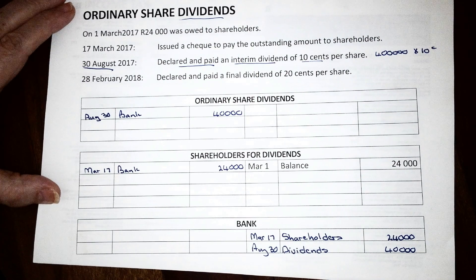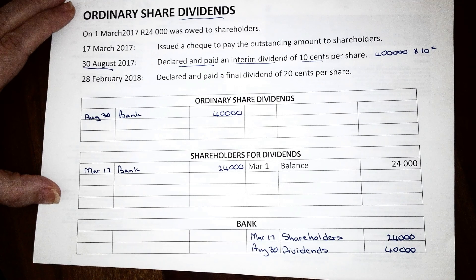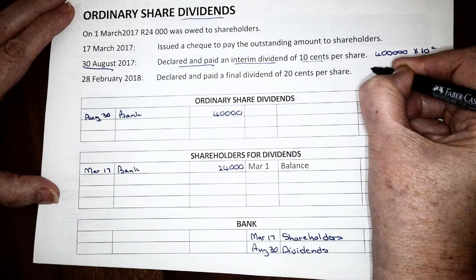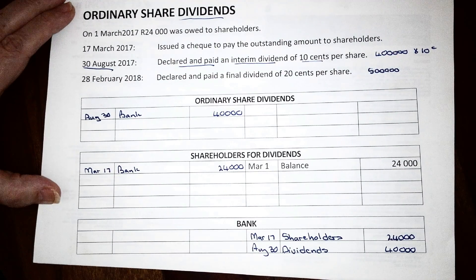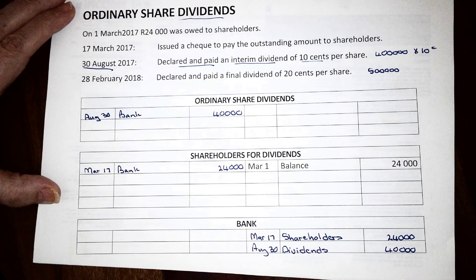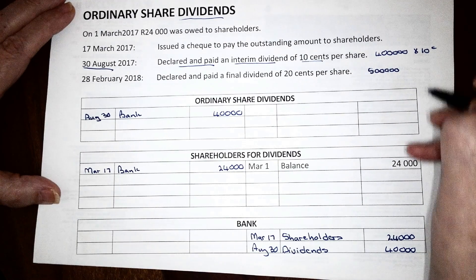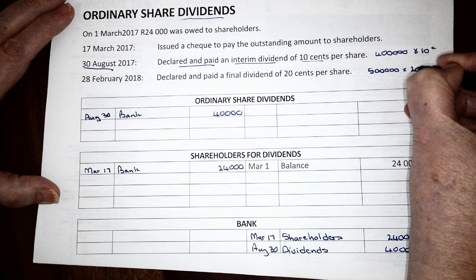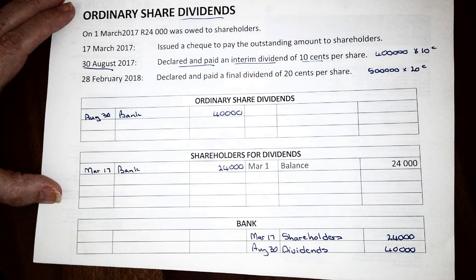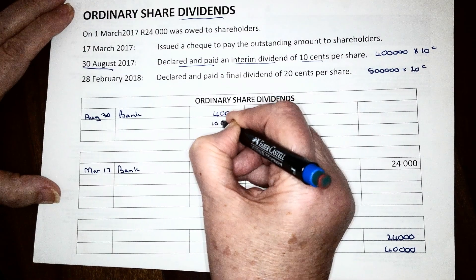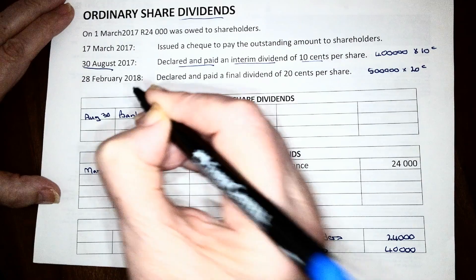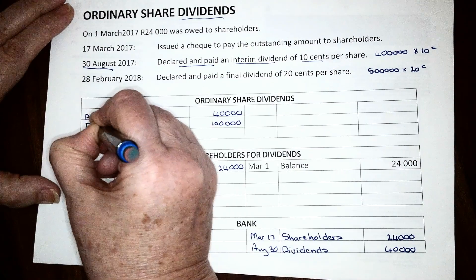Then we issued more shares on the 31st of August — 100,000 shares — so now we've got 500,000 shares in the business. On the 28th of February, which is the last day of the financial year, a final dividend of 20 cents per share was declared. If we multiply 500,000 shares by 20 cents, we get 100,000 Rand. So the ordinary share dividends expense will increase by 100,000 Rand on February the 28th.